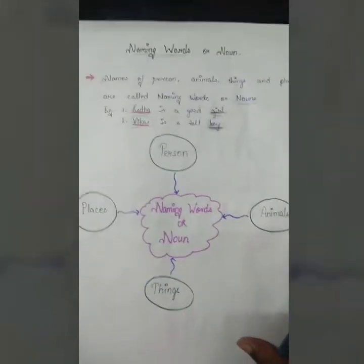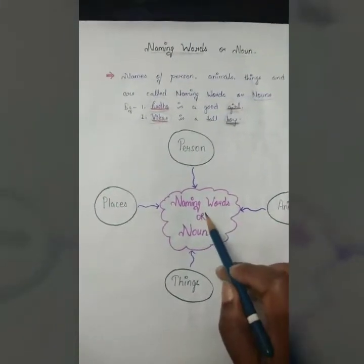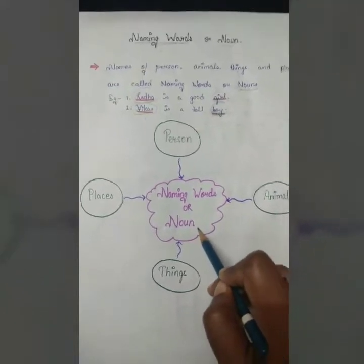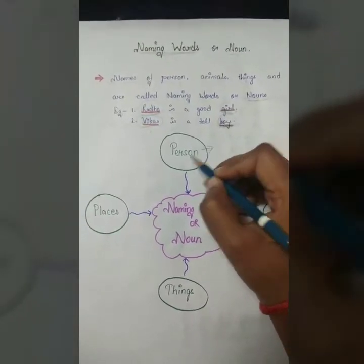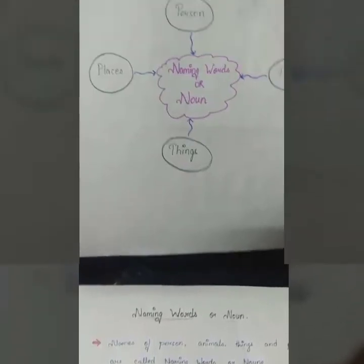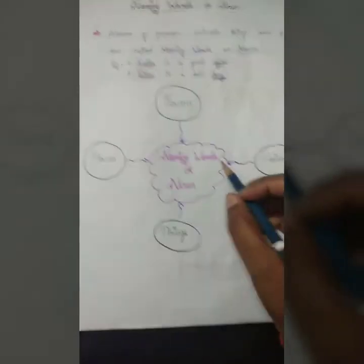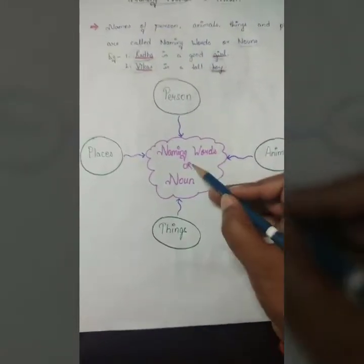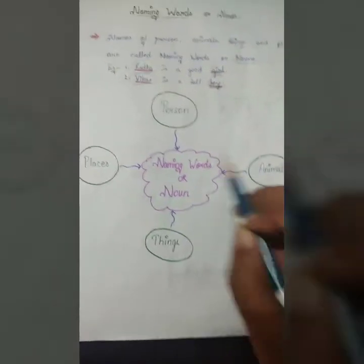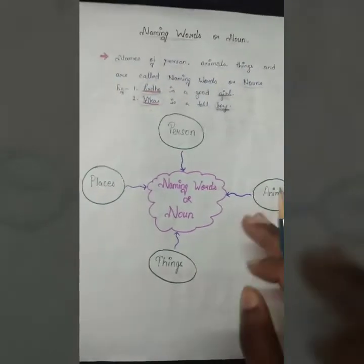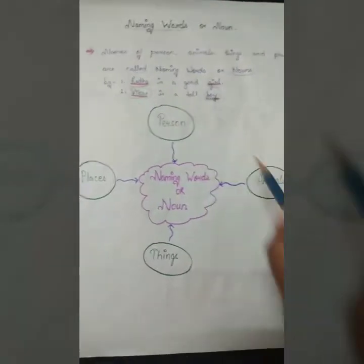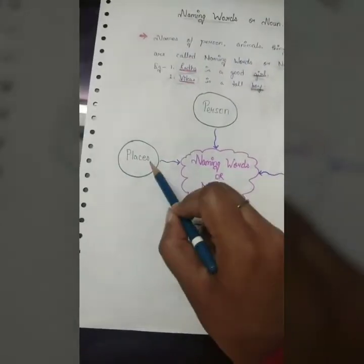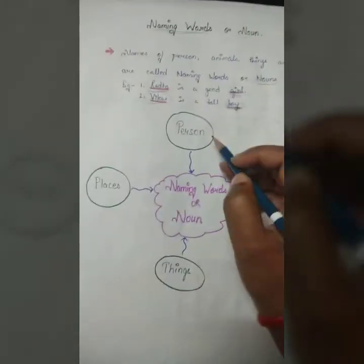Now, for better understanding, we can understand from this chart that naming words ya noun kaun kaunse hota hai. See, naming words man, noun ya naming words man, first name hota hai. Now, for better understanding, you can understand it from this chart. See, naming words or noun. Naming words or noun ko, hum, char, four categories me use karte hai. Now, for four, kon kon si category me use karte hai? Person, animal, things and places. Person me kaise use karte hai?